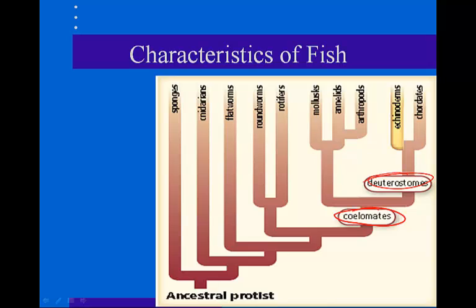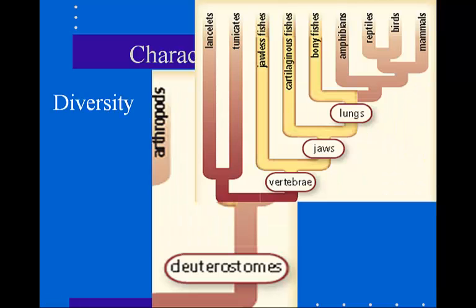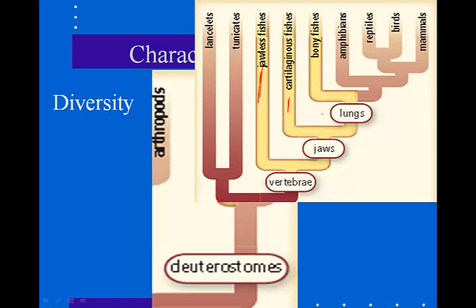Fish live in most aquatic environments on Earth — lakes, streams, ponds, the bottom of the ocean, freezing polar waters. Our chordates can be broken down by the presence of vertebrae. Lancelets and tunicates are invertebrate chordates. Our first vertebrate is the jawless fish. The addition of jaws gives us our cartilaginous fish, and then the presence of lungs gives us our bony fish.